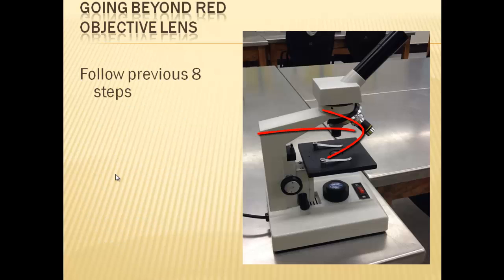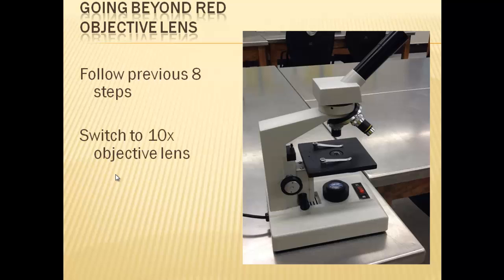Oftentimes we're going to want to use the yellow, which is the 10 power objective lens, or the blue, which is the 40 power objective lens. So we need to make sure that we follow those eight steps: plug it in, make sure it's turned on, make sure that you have the short objective lens pointing down and the stage is moved all the way up. And then what you're going to do is, after you have the item in the field of view and it's perfect and you can see it clearly, that's when you're going to switch your objective lens. Only when you can actually see the item in clear view under the red objective lens are you going to switch it.